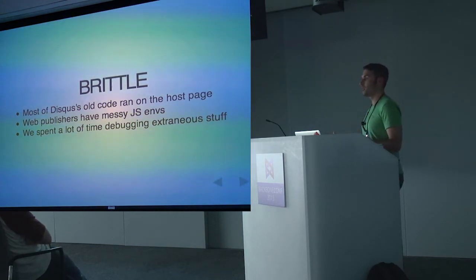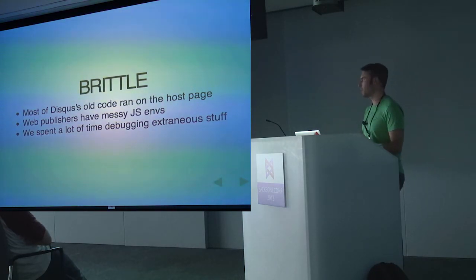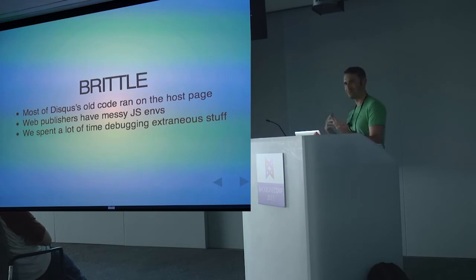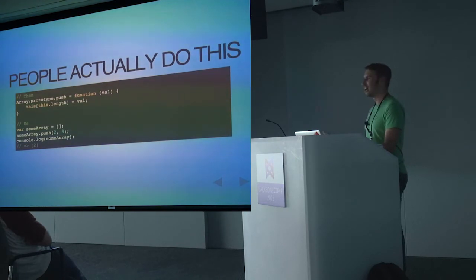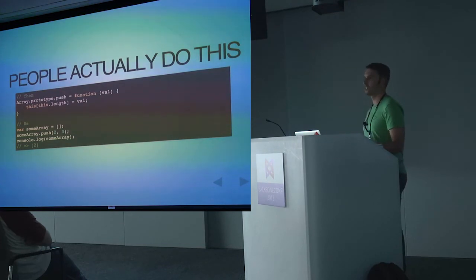We were also running a lot of code on the host page. A lot of people have messy JavaScript environments — legacy globals everywhere. You'd find yourself debugging CNN.com and discover plugins, or another third-party script messing with everything. Here's a true-to-life example: somebody decided to override Array.prototype.push. They removed functionality — even though it works for single pushes, the actual Array prototype push takes multiple arguments. We had code that pushed multiple values, it broke, and that's the kind of thing we'd be debugging.